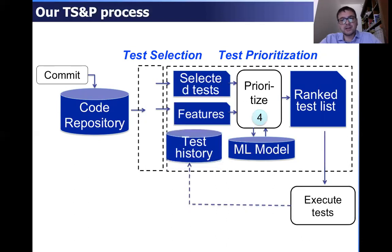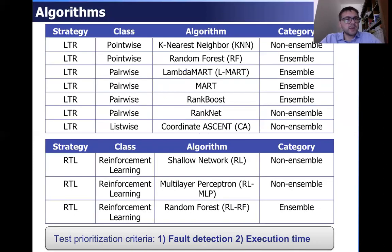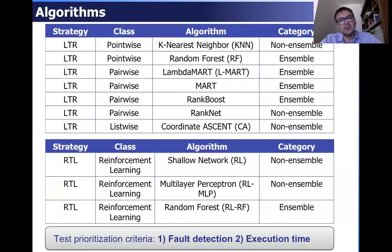The tests are executed and the output is used to update the test history for the next cycle. The prioritization algorithms that we compare are listed in these tables. They are 10 algorithms: seven are LTR (learning to rank) algorithms and three are reinforcement learning algorithms. Nine of these algorithms have never been applied to continuous integration. These are quite representative of learning to rank algorithms because they include both ensemble and non-ensemble learning.